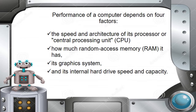The performance of a computer depends on four factors: the speed and architecture of its processor or central processing unit, which is the brain of our computer; how much random access memory it has; its graphics system, whether it supports great visual effects; and its internal hard drive and capacity.